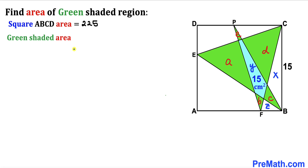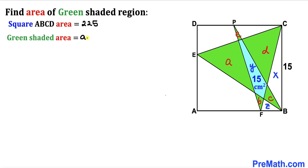Now let's focus on the green shaded region. The green shaded area consists of regions A, B, C, D, and E. So the total green shaded area is going to be A + B + C + D + E, and our task is to find this value.